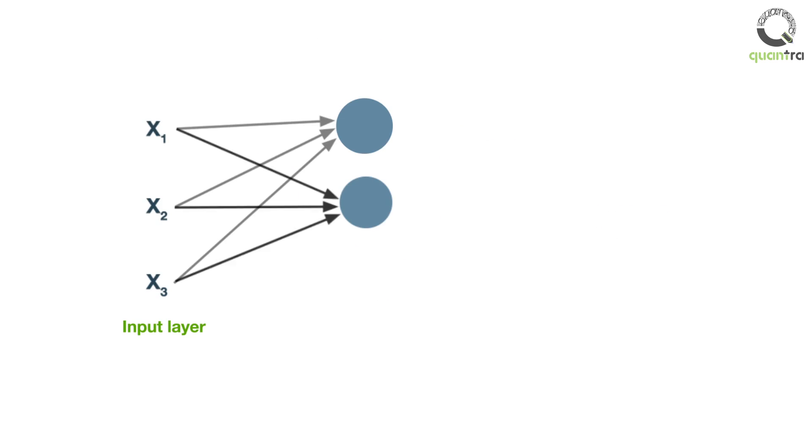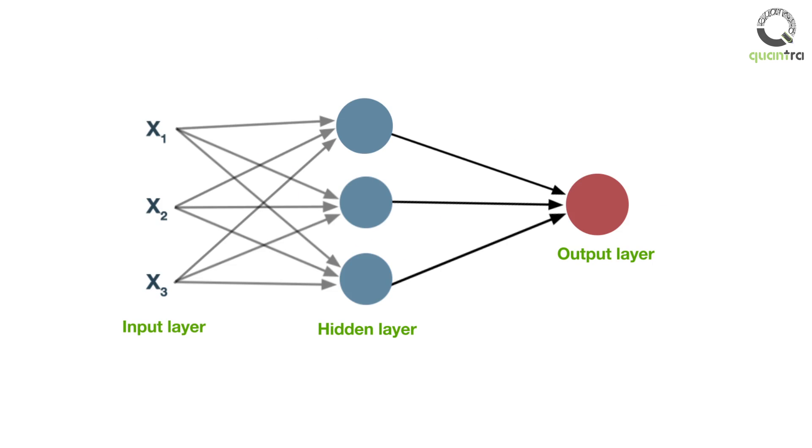A neural network typically takes input from all the features and itself figures out the function for each of the neurons for improving the prediction accuracy.